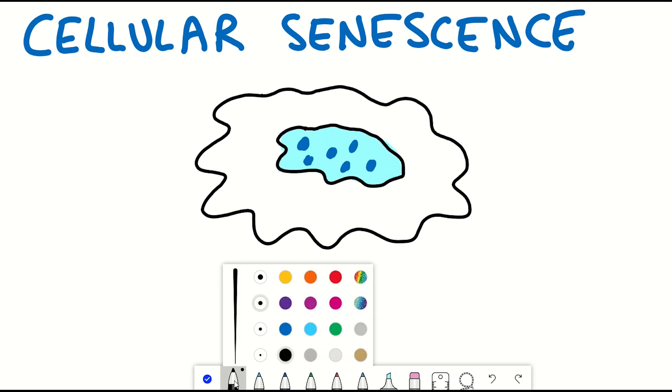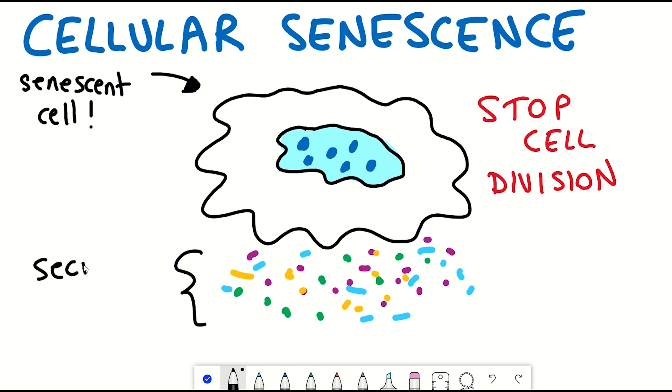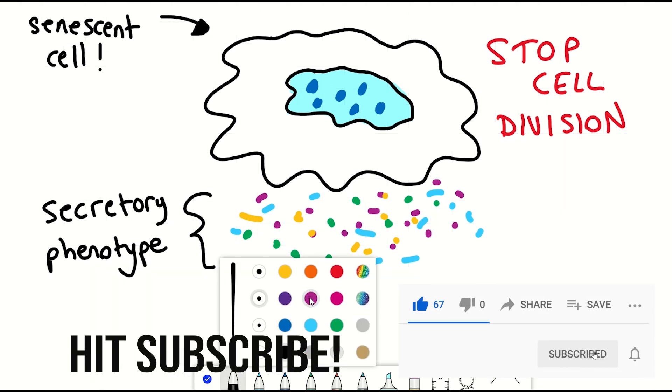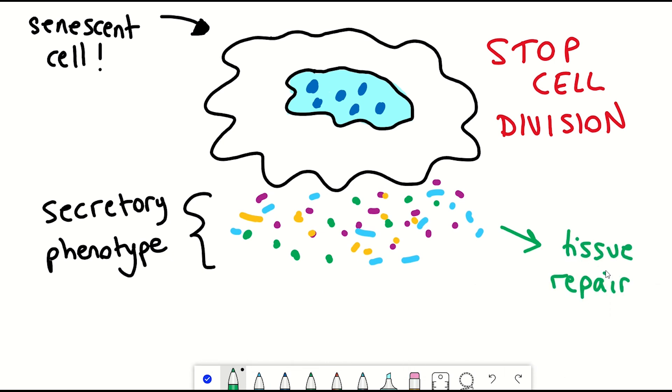Well, they are a term given to cells that have entered a cell fate whereby they no longer divide and acquired the ability to produce a variety of factors that they then secrete into their surrounding environment. These secreted factors include factors that can modulate the surrounding environment of the cell and help fix any damage that may have caused the cell to become senescent in the first place, as well as inflammatory factors that may recruit immune cells to clear the senescent cells. So this will seem pretty positive.